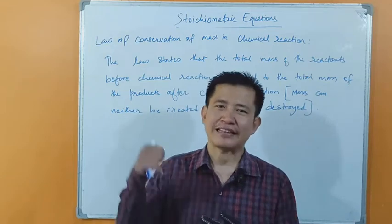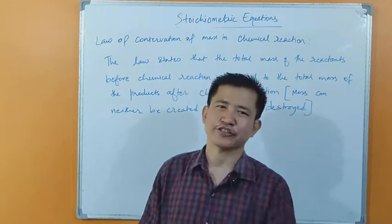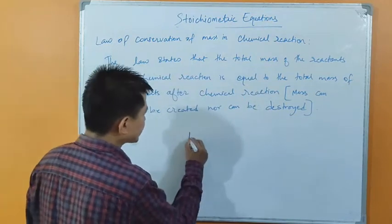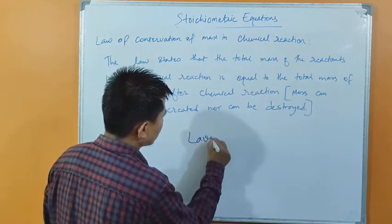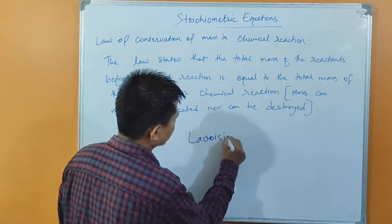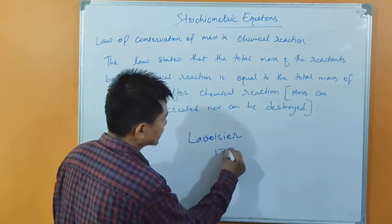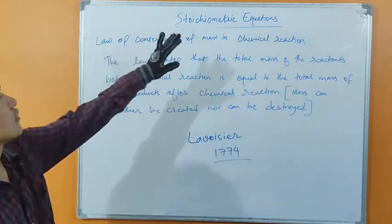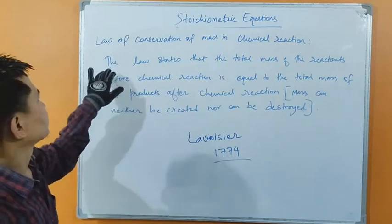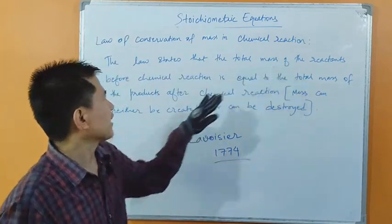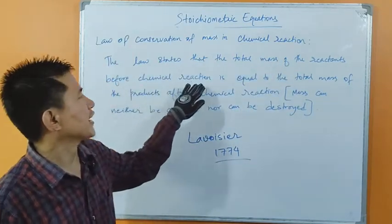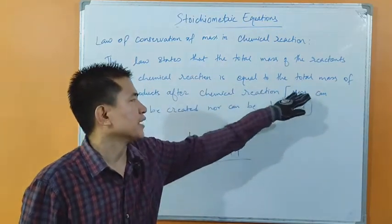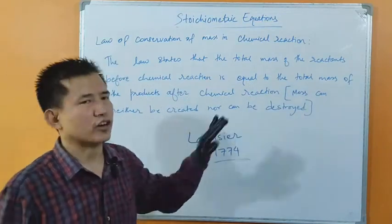Before going to the chapter, let us read out the law related to chemical reaction. This law was proposed by a very famous scientist named Lavoisier in the year 1774. The law says that the total mass of the reactants before chemical reaction is equal to the total mass of the products after chemical reaction. Mass can neither be created nor can be destroyed.